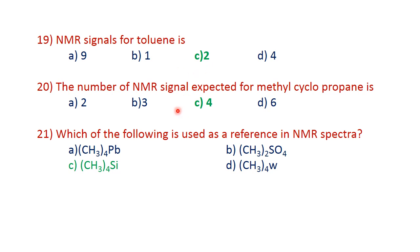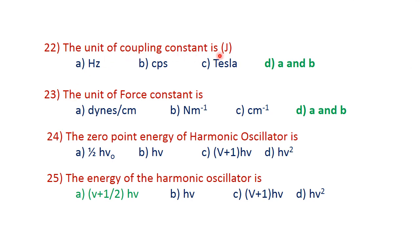Question 19: the number of NMR signals expected for methylcyclopropane. Question 20: which of the following is used as a reference in NMR spectra? TMS, tetramethylsilane Si(CH3)4, is used as a reference in NMR. C is the correct answer. The unit of coupling constant is Hz or CPS. The correct answer is D.